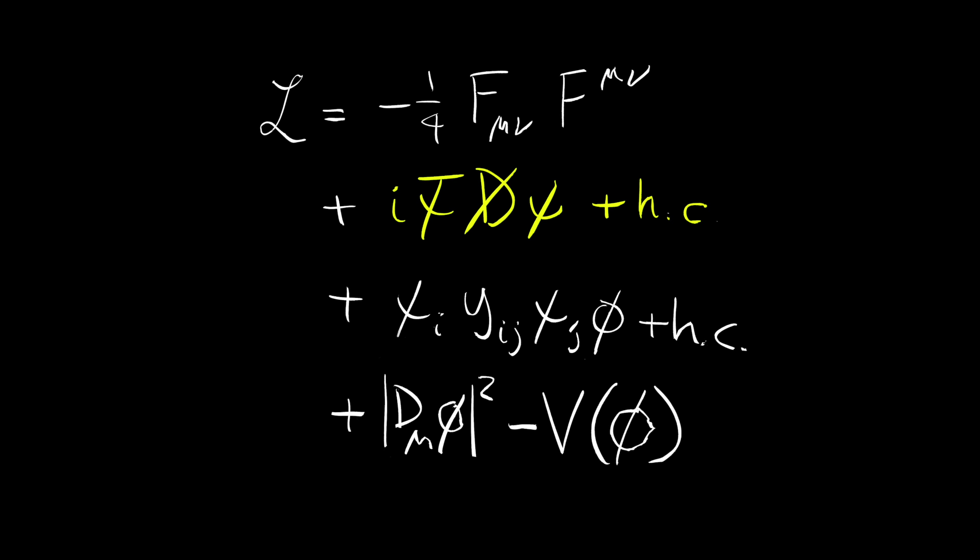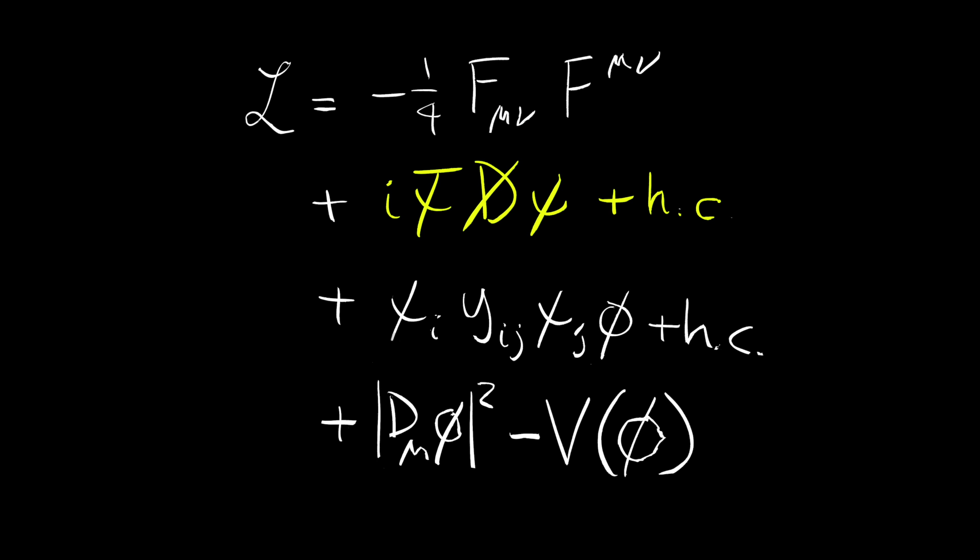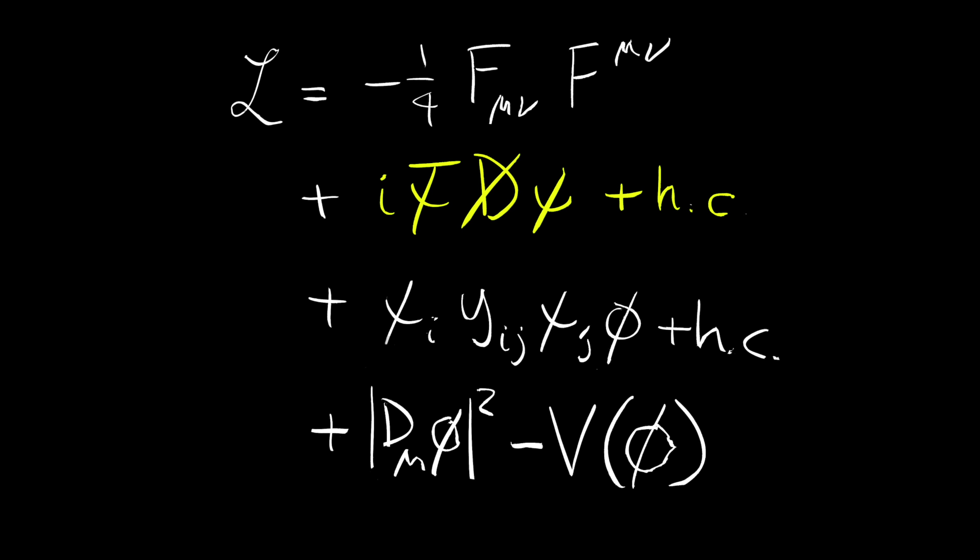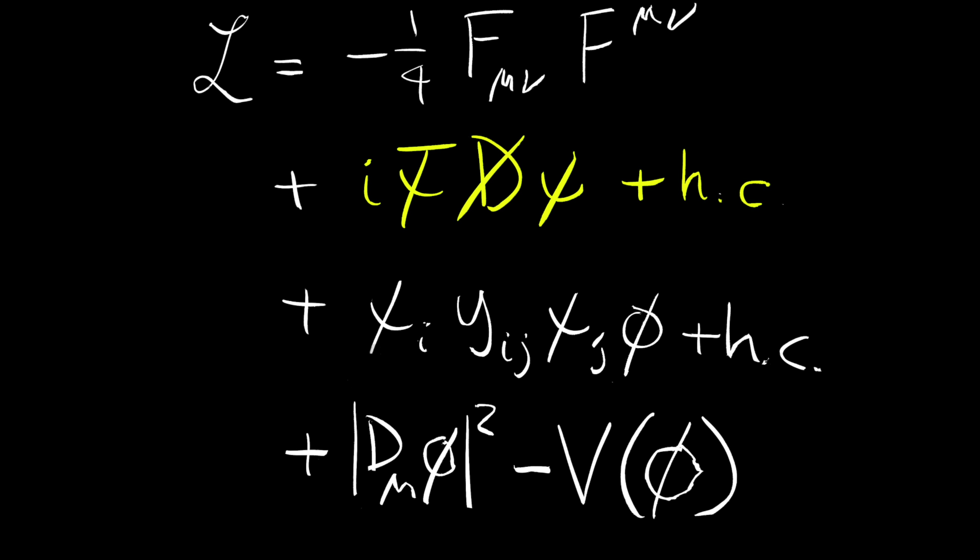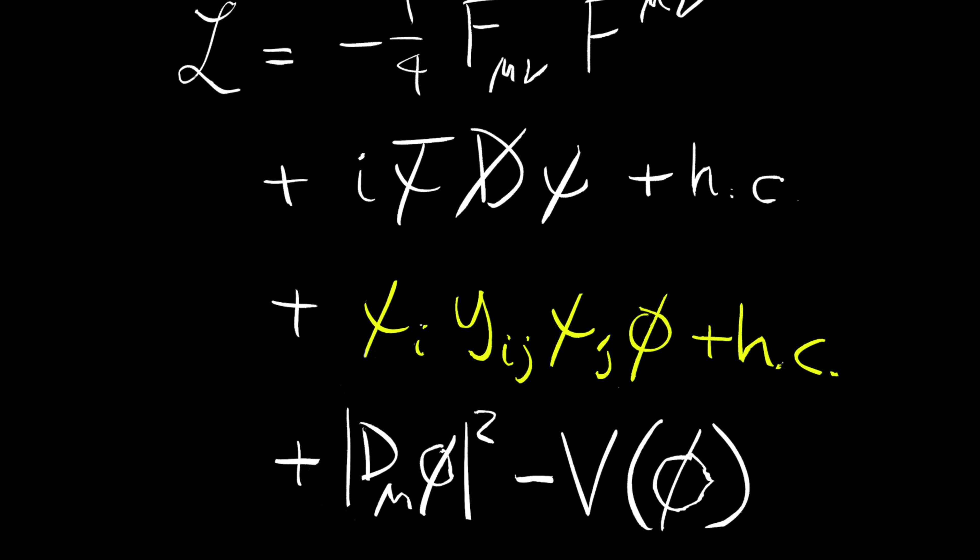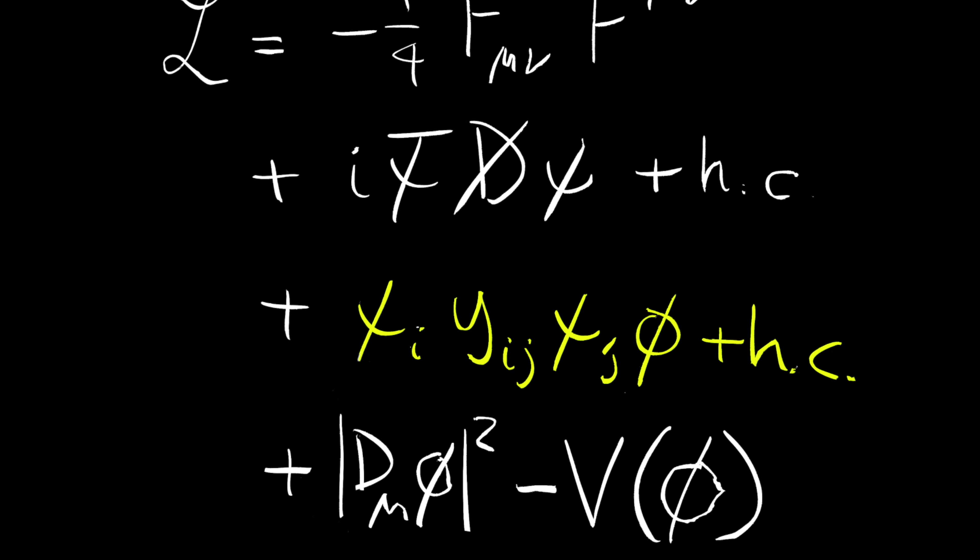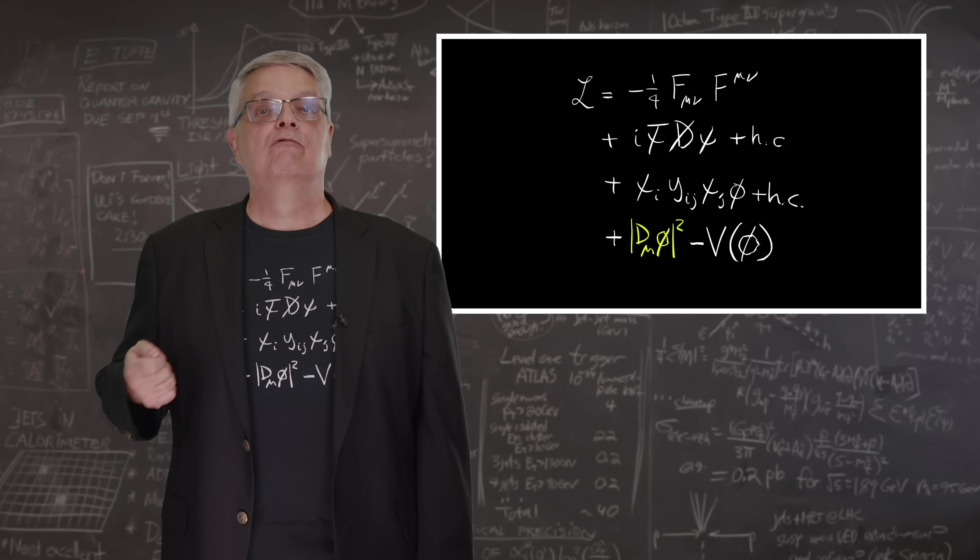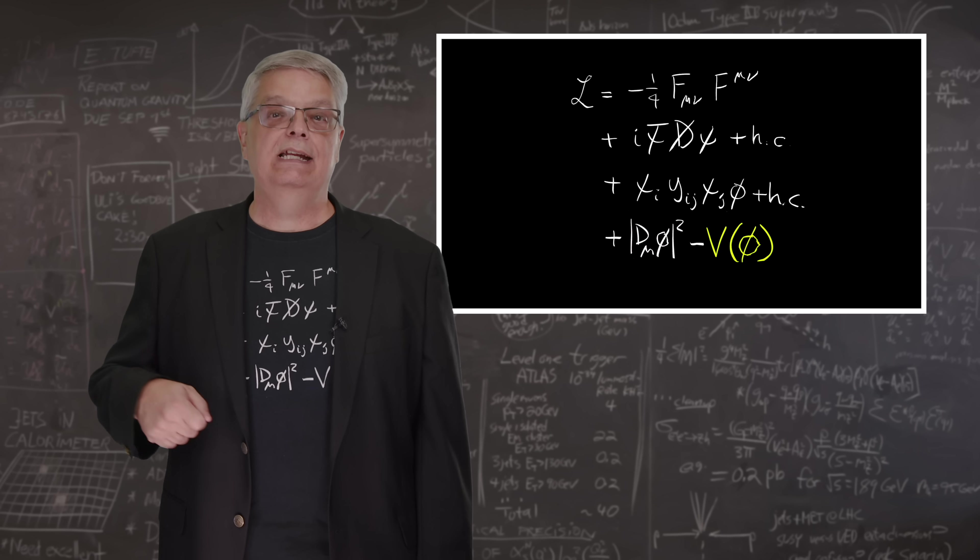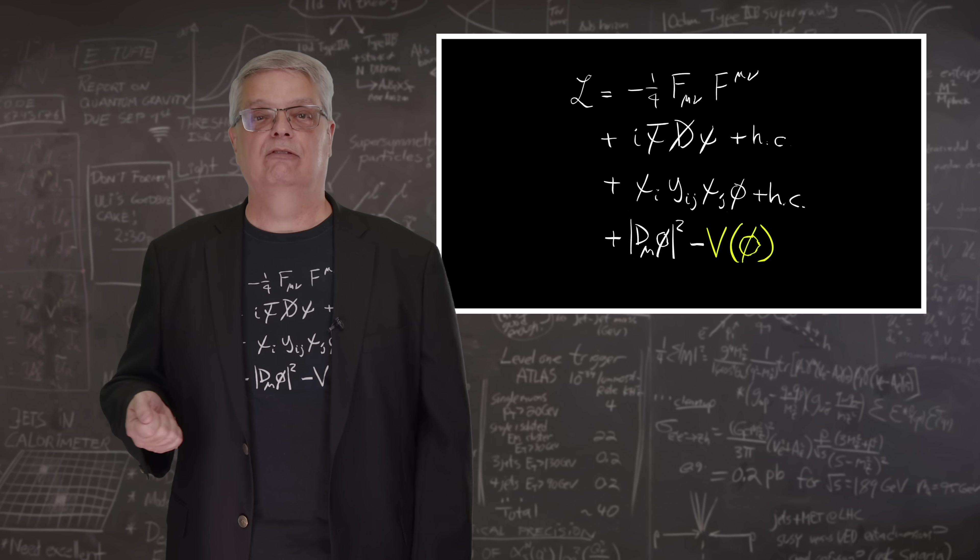The second line, the one with a D with a slash through it, describes the particles, specifically the fermions like quarks and leptons, and how they interact with the subatomic forces. The third line covers how the Higgs boson interacts with quarks and leptons. The fourth line's left-hand side represents how the Higgs interacts with the other forces, and the right-hand side represents how the Higgs interacts with itself.